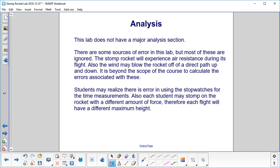This lab does not have a major analysis section. And there are certainly some sources of error, but most of these are disregarded. And why are they disregarded? It's beyond the scope of the course to calculate the errors, so it won't be the most accurate lab. The stomp rocket will certainly experience air resistance during its flight. Also, the wind may blow the rocket off of a direct path up and down. Students may realize there is error in using the stopwatches for the time measurements. And each student may stomp on the rocket with a different amount of force, therefore each flight will have a different maximum height and initial velocity. And if you're just using a tennis ball and throwing it up in the air, the same thing applies here.